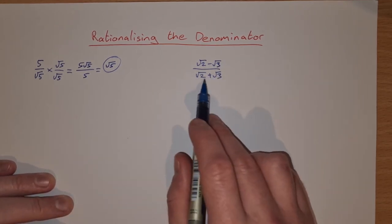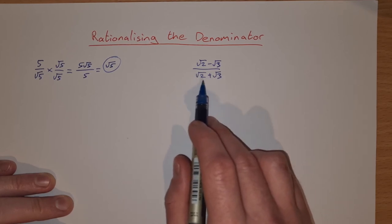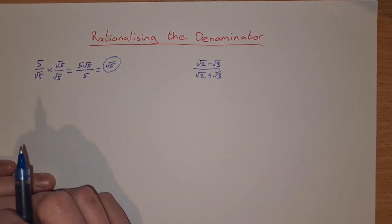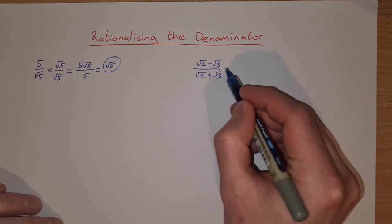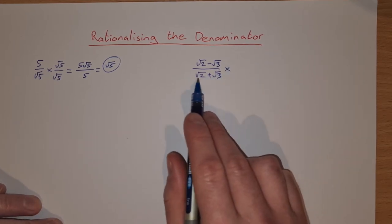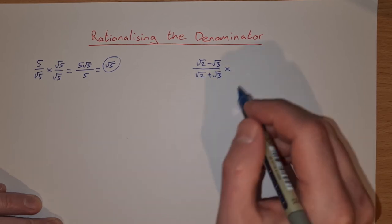So we want to rationalize this denominator here. To rationalize the denominator, what we need to do is multiply the denominator by the conjugate of the denominator. So the conjugate of the denominator is basically the same thing, but we change the sign of the second one.